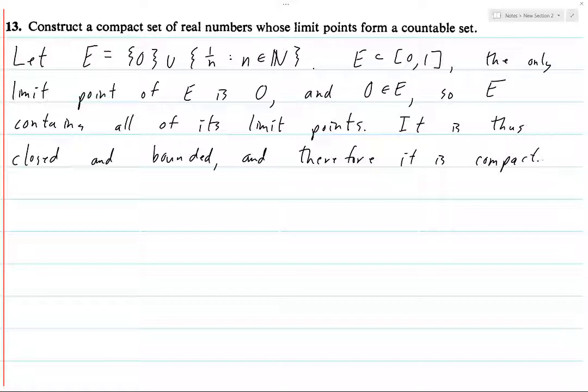However, that's probably not what they're asking for — they probably want a set whose limit points form an infinite countable set. This reminds me of something an analysis professor told me: sometimes there's ambiguity in a problem statement, and you should always interpret the question in the most difficult way possible. So let's construct a compact set whose limit points form an infinite countable set.